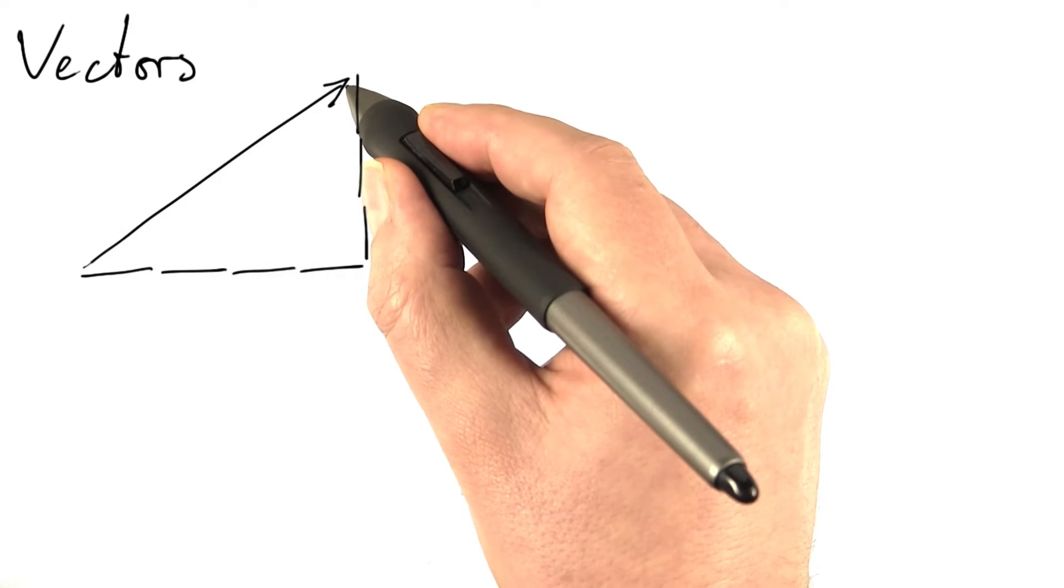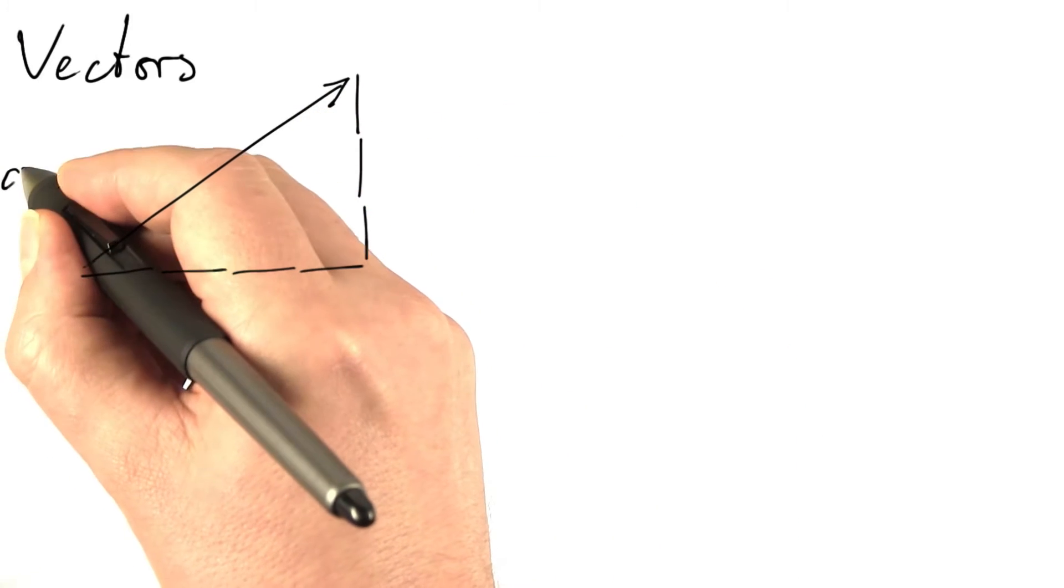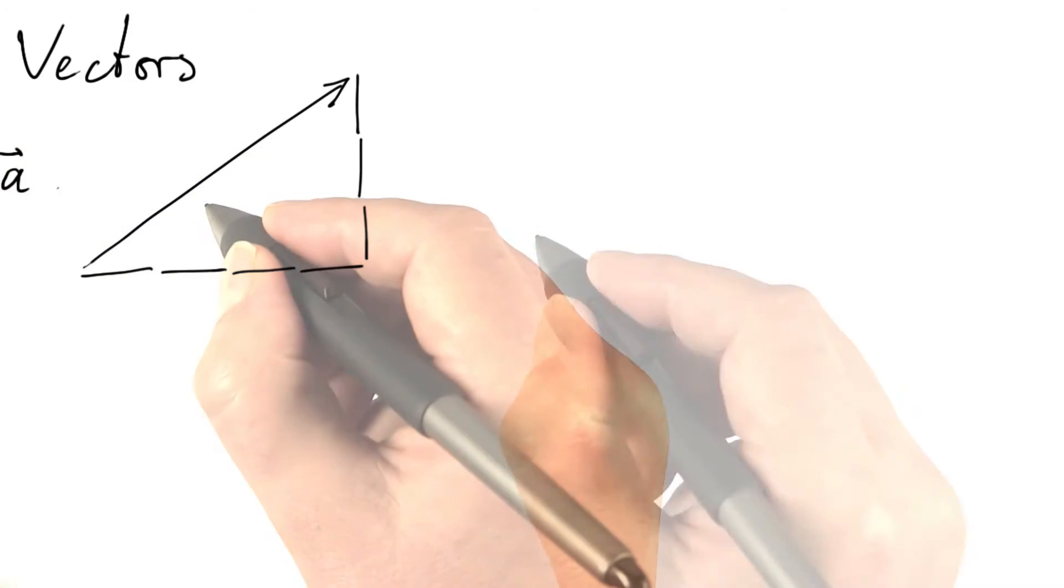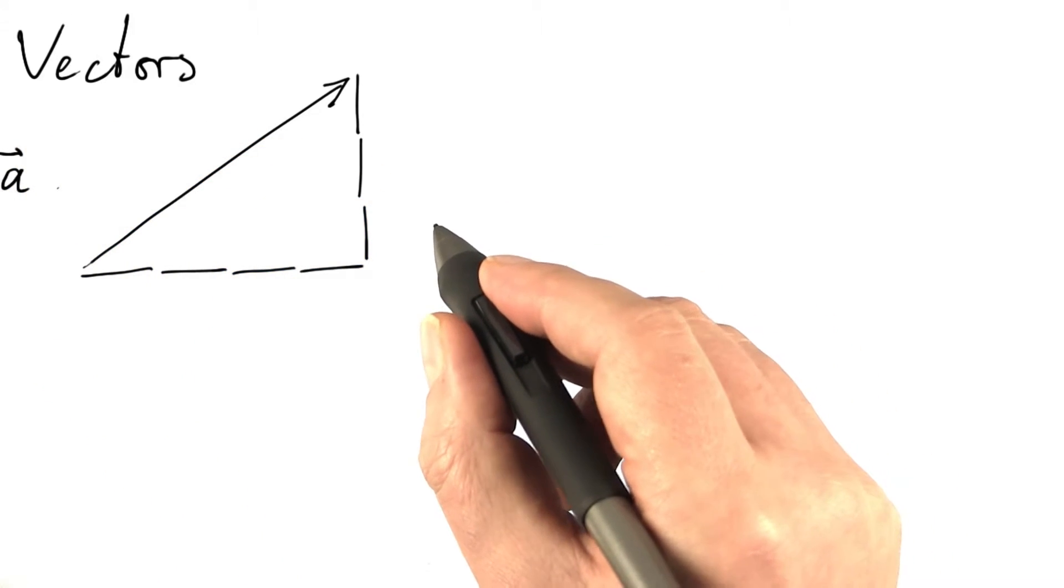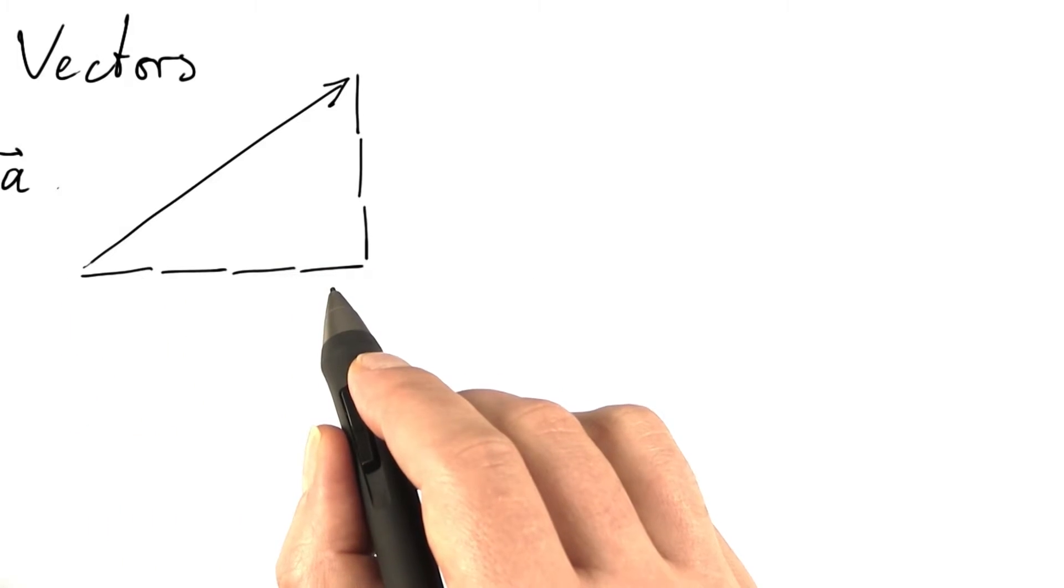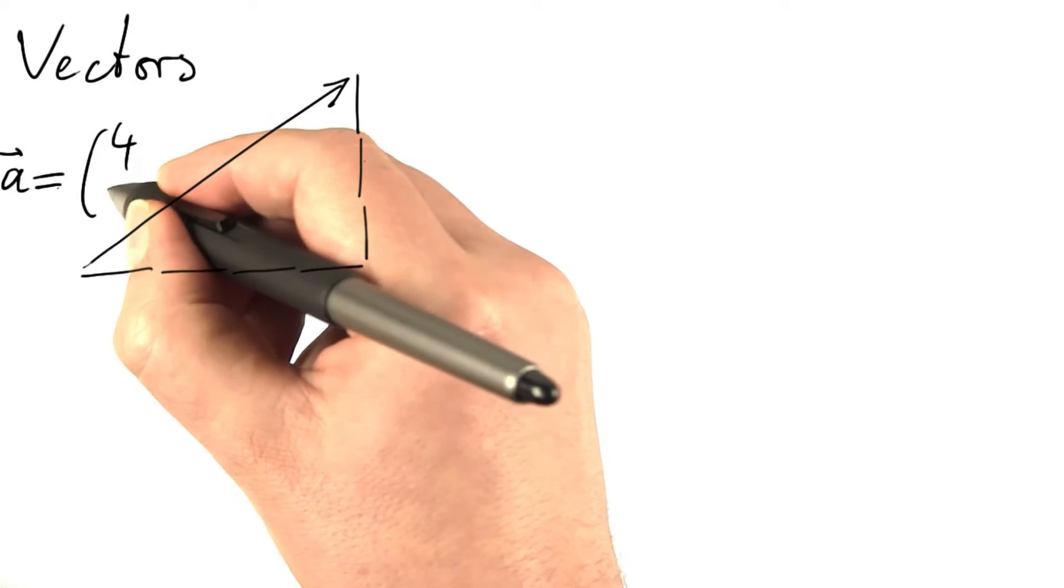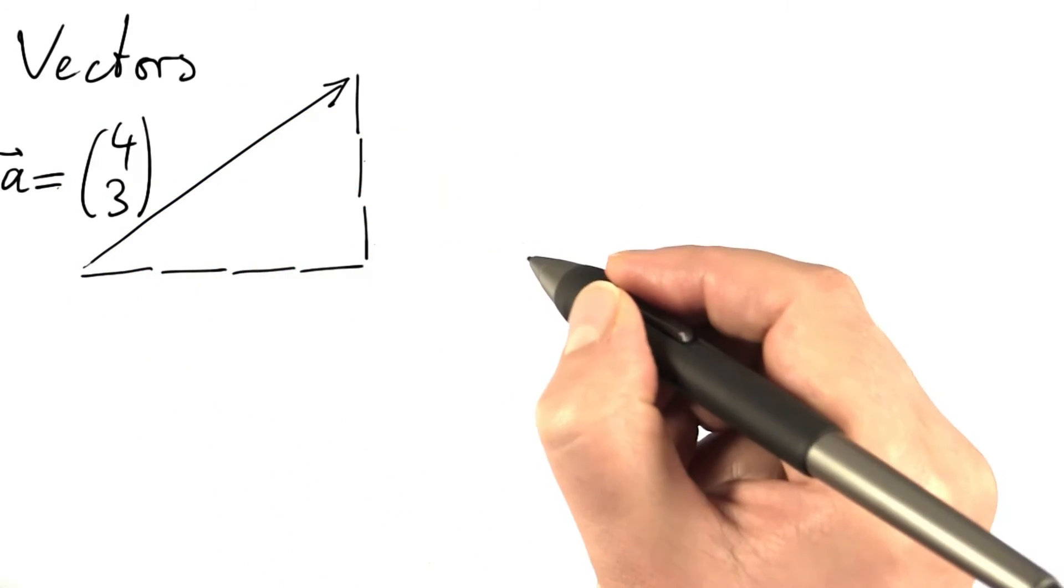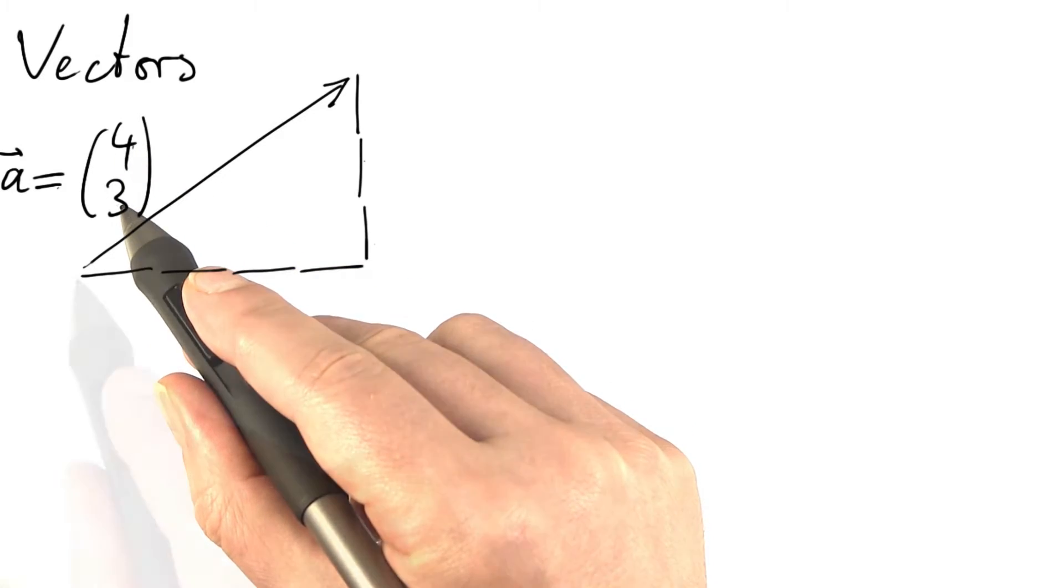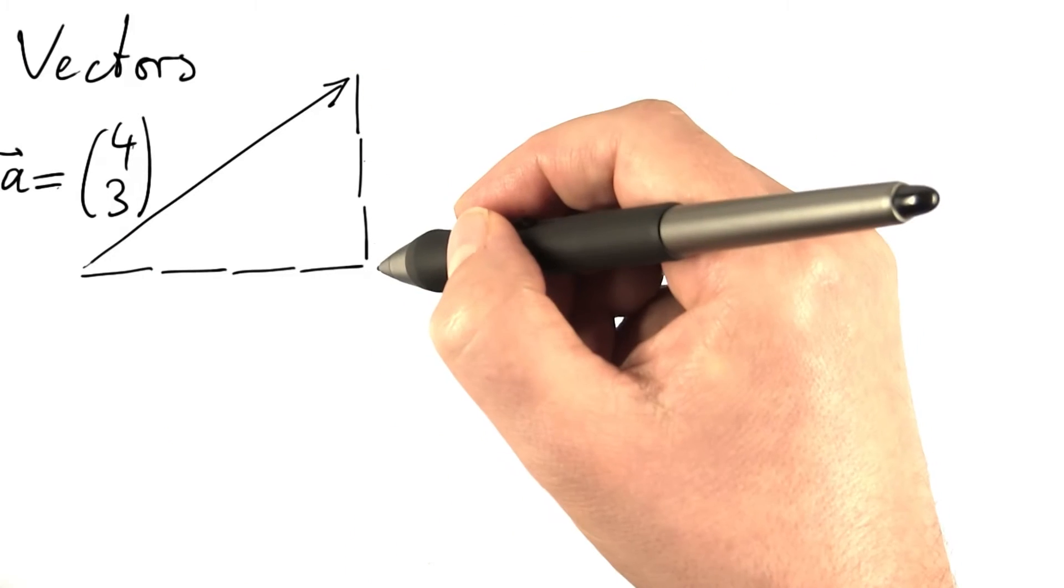Vectors can be represented by arrows. Typically we denote vectors by lowercase Latin characters with an arrow on top of them. And we can also express them in numbers. This arrow, vector, is four units to the right and three units up, which is why we can write 4, 3 in this way. These are called components of the vector, x component, y component, if the x-axis points right and the y-axis points up.